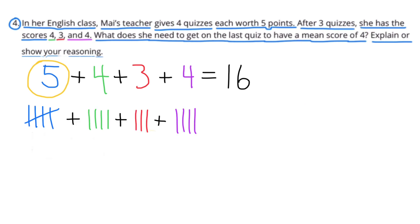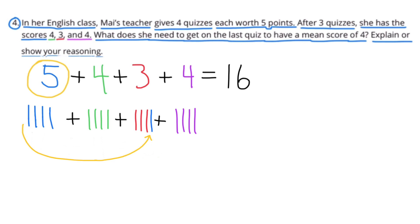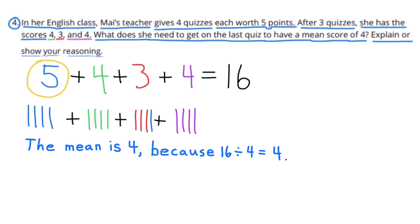I'll use these tally marks to illustrate another way to find the mean. The blue tally marks on the left represent the 5 points that Mai needs to score on her last quiz. If I take 1 tally mark away from that group of 5 tally marks and move it over to the group of 3 tally marks, then each group will have 4 tally marks, showing that the average, or the mean, is 4.